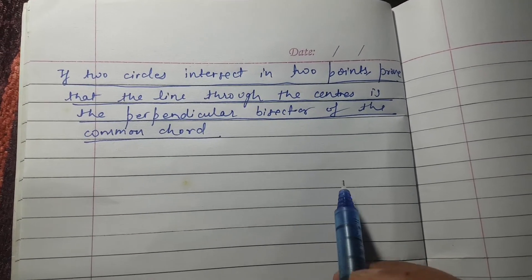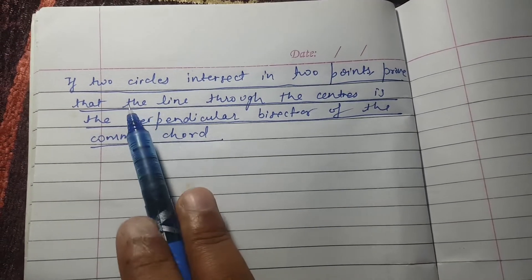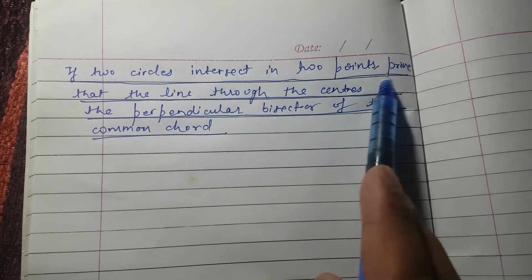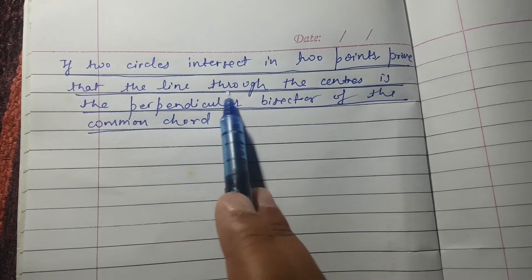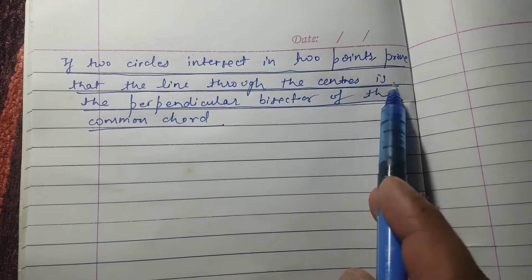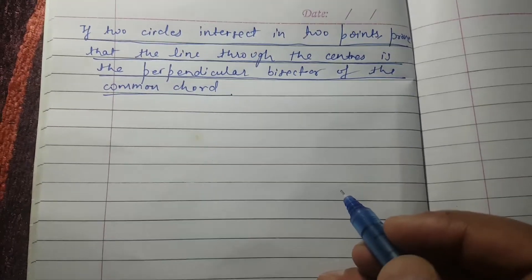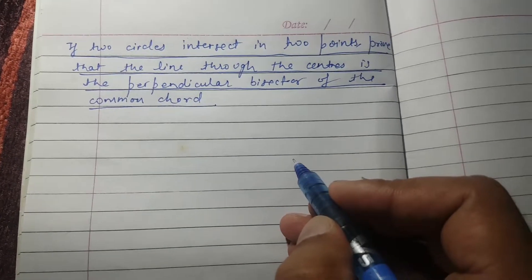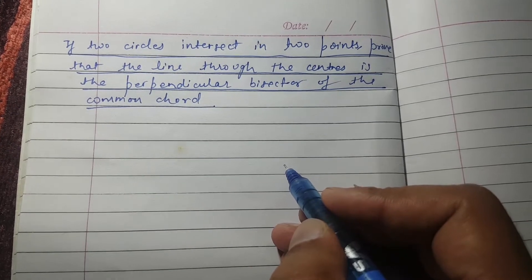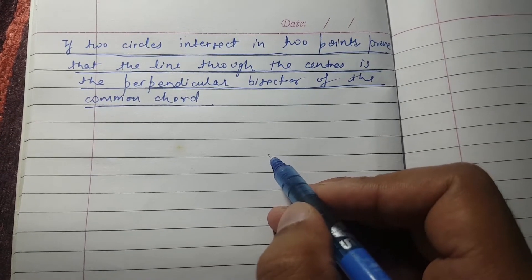Hello guys, in this video we're going to prove that if two circles intersect in two points, then the line through their centers is the perpendicular bisector of the common chord. I will first draw the figures, then it will become clearer.